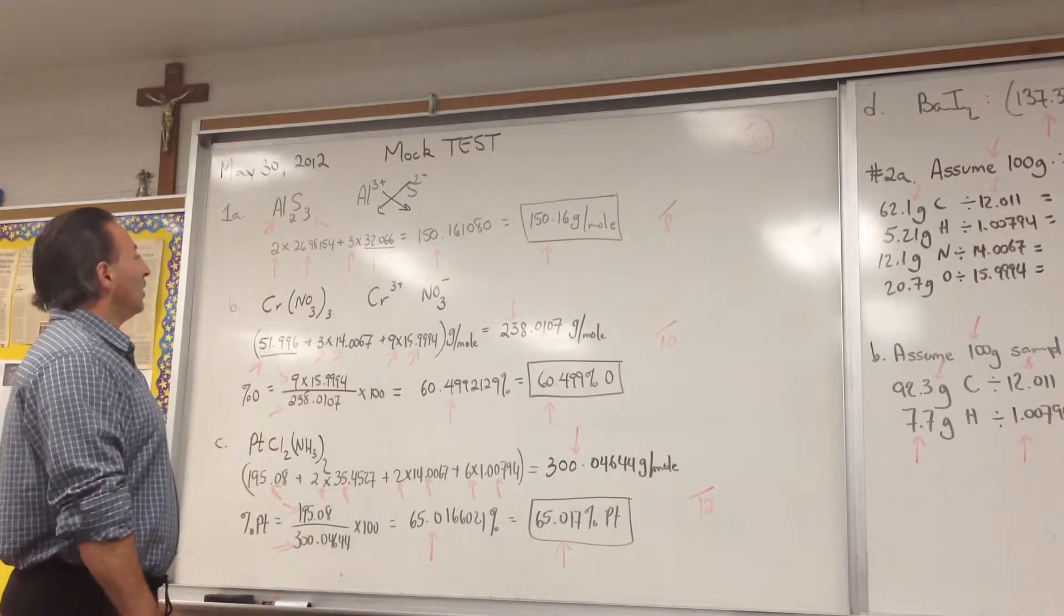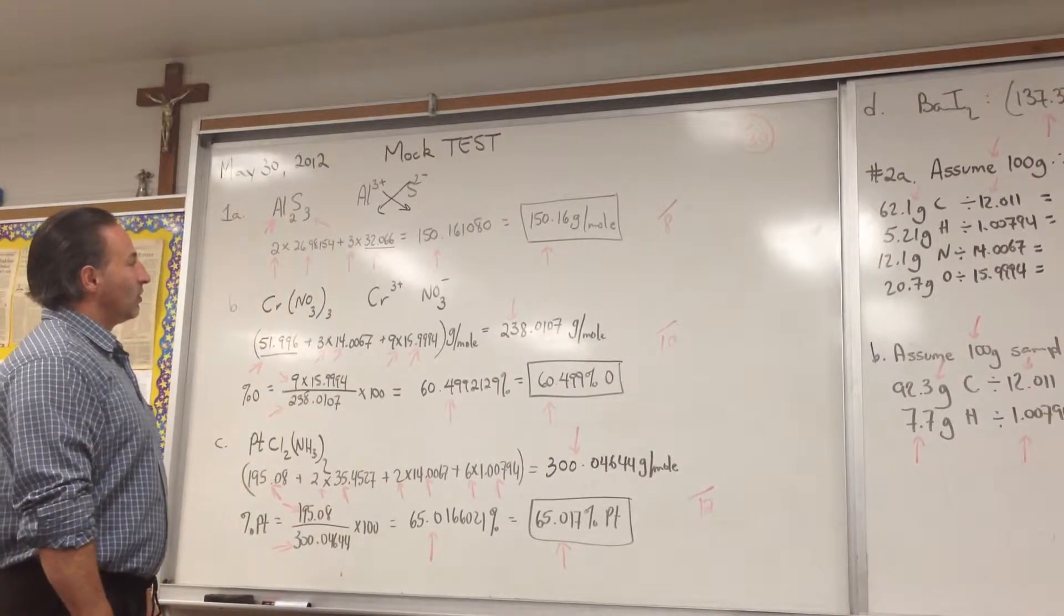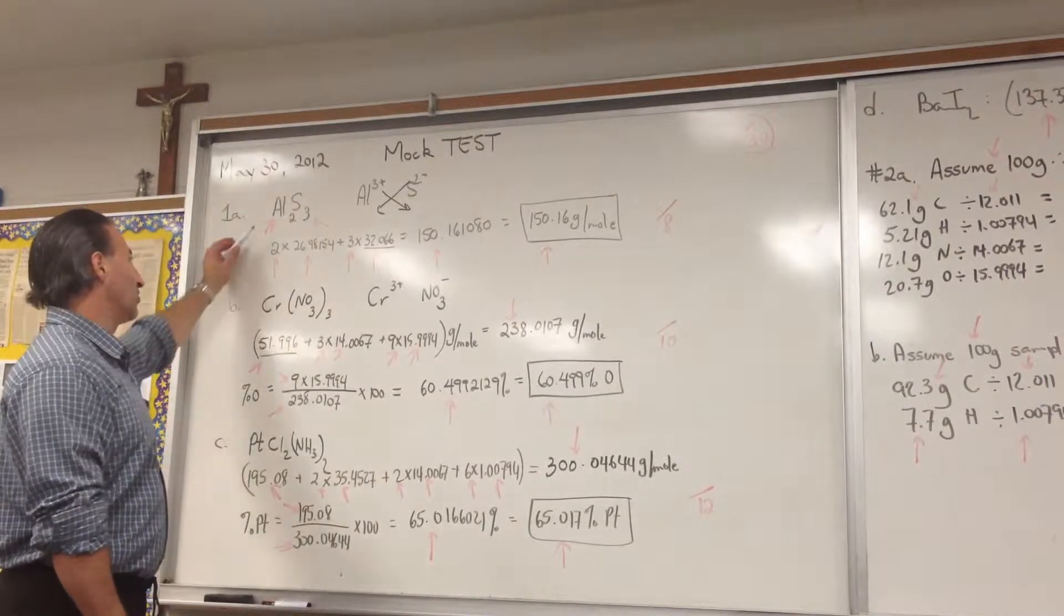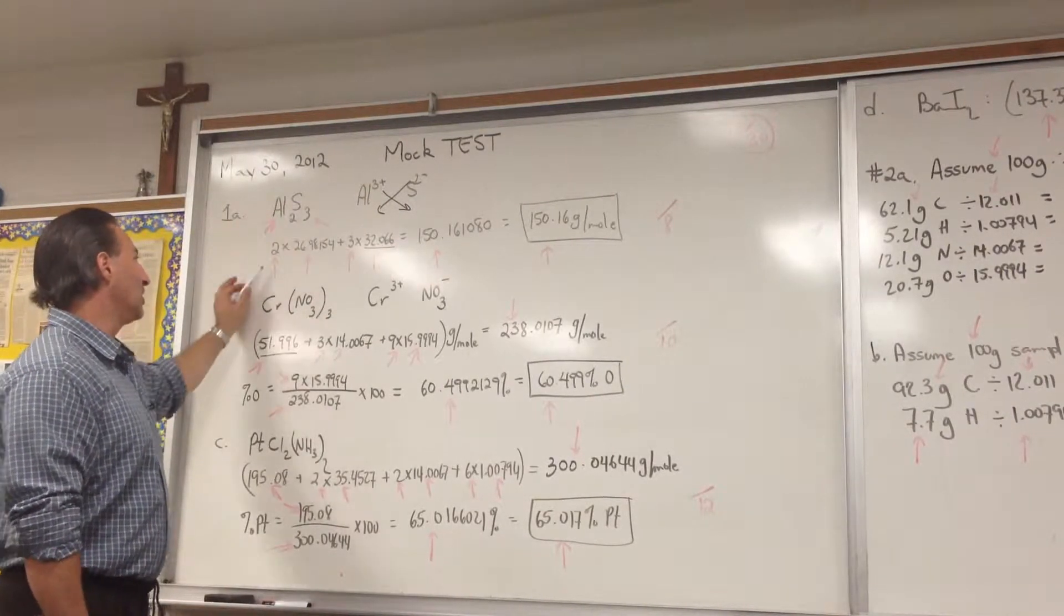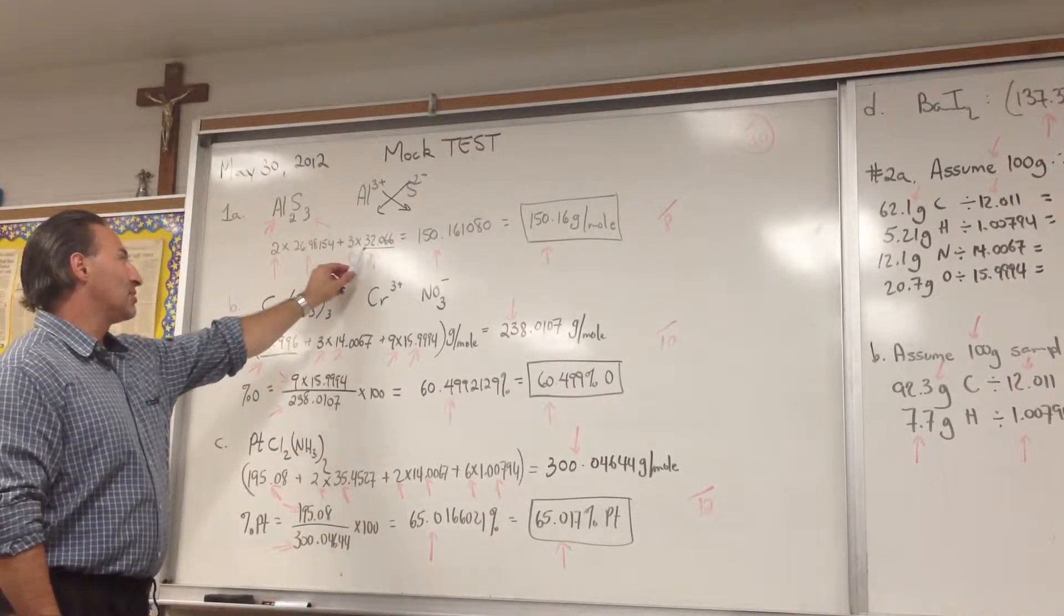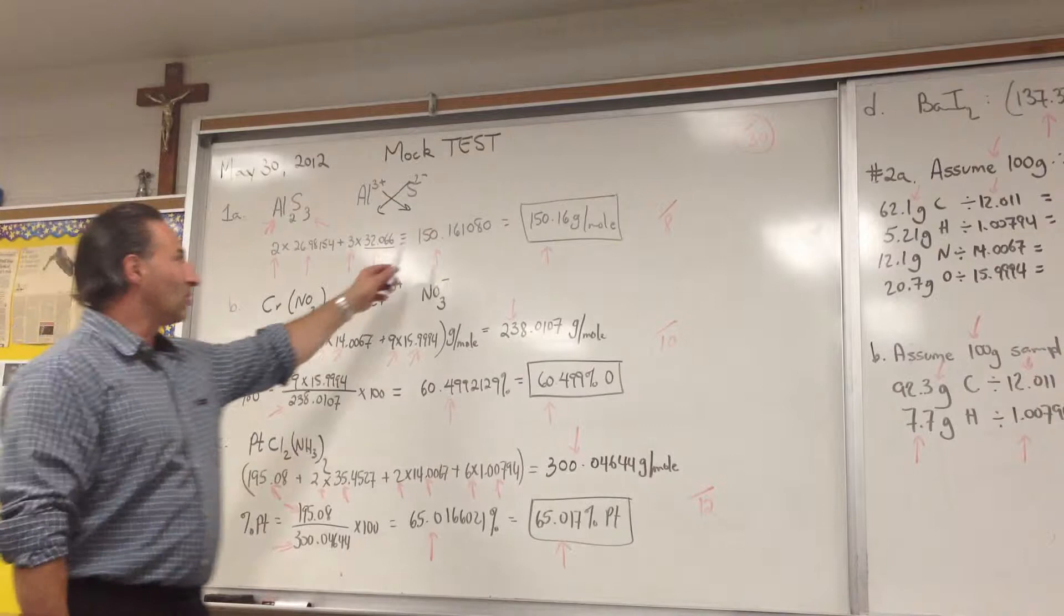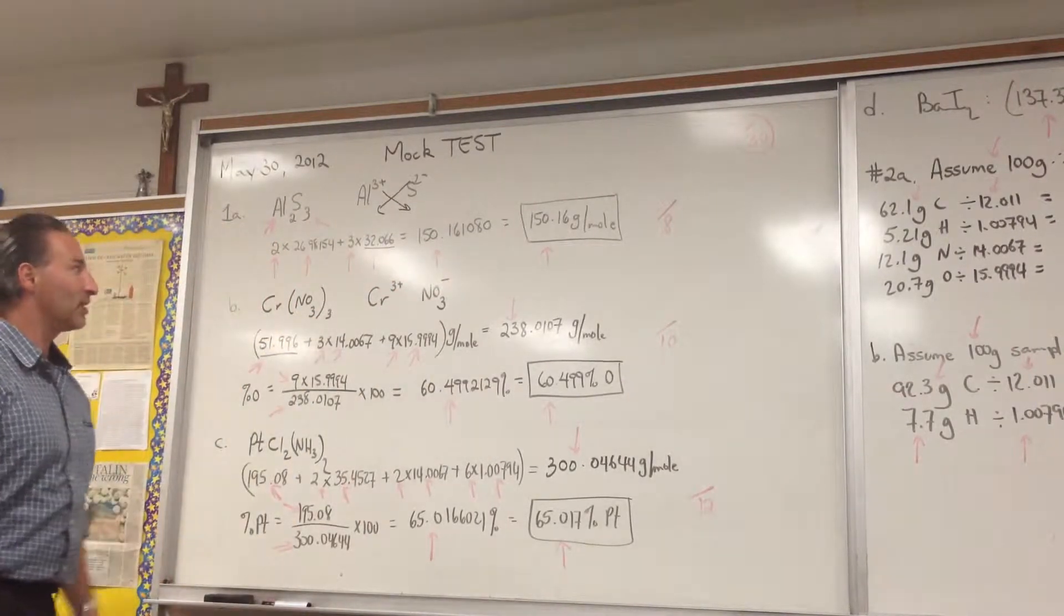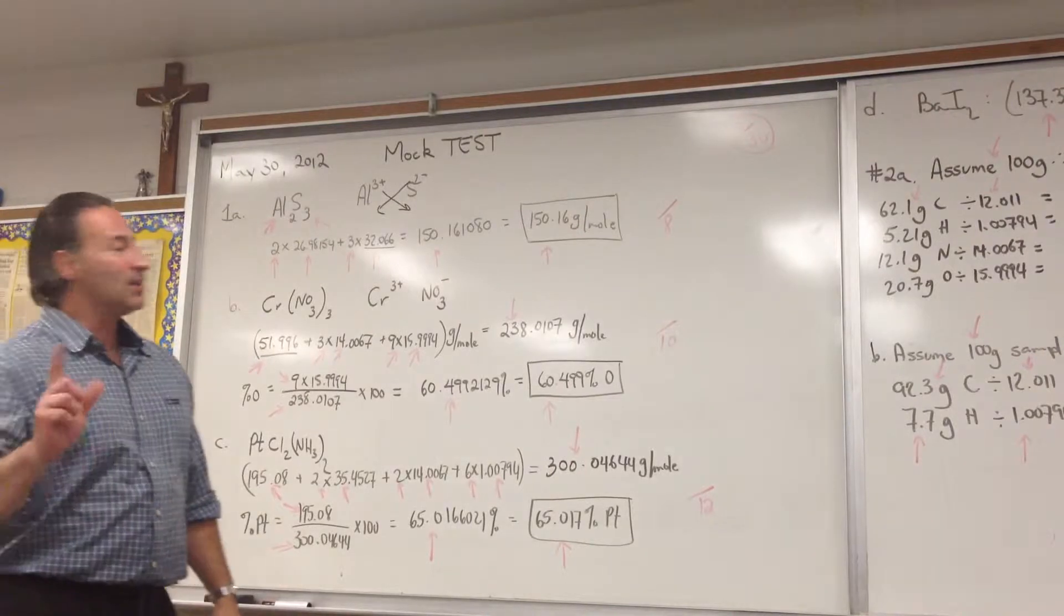All these red arrows point out what I'm looking for when I correct this particular problem. So I'm looking for the aluminum with two, the sulfur with three, that there's two times the molar mass of aluminum, that there be three times the mass of sulfur, and that the total is 150.161, and that you report it to the correct number of significant figures. So number 1A is eight marks.